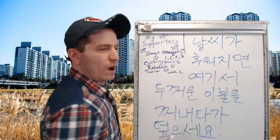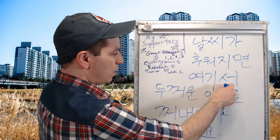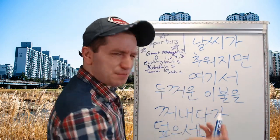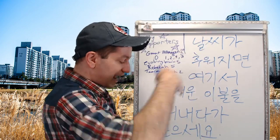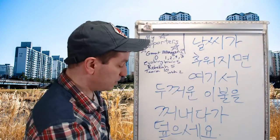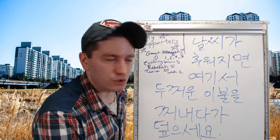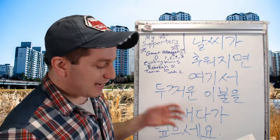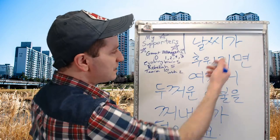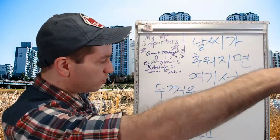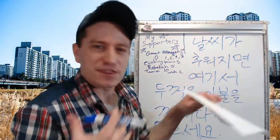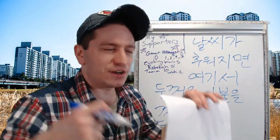날씨가 추워지면 — when the weather gets cold — 여기서, from here, 두꺼운 이불, a thick blanket, 꺼내다가, take it out and then go to your room or wherever you're going to sleep, 덮으세요, and then put it on you. So when the weather gets cold, take out a thick blanket from here and cover yourself with it. 날씨가 추워지면 여기서 두꺼운 이불을 꺼내다가 덮으세요.